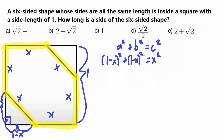We now have an equation with one variable, which means we can solve for X. The first thing we want to do is expand the squared terms. We have (1 minus x) squared, and for this we can use the second binomial formula: (a minus b) squared equals a squared minus 2ab plus b squared.